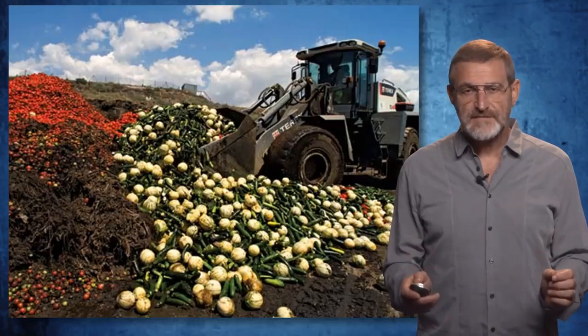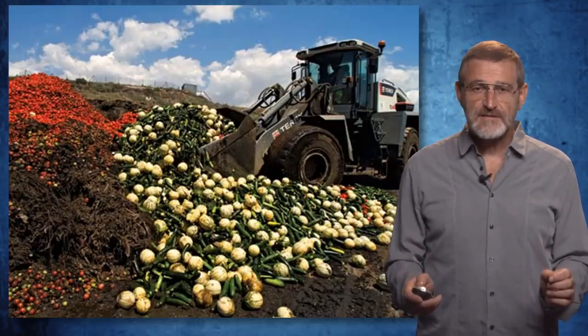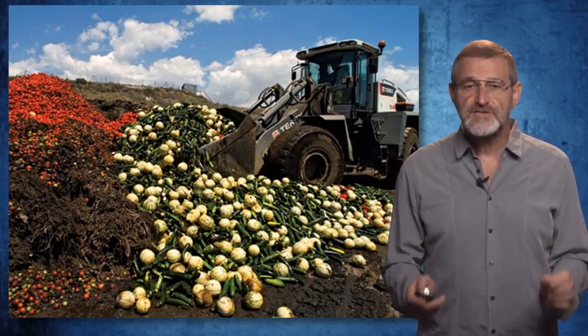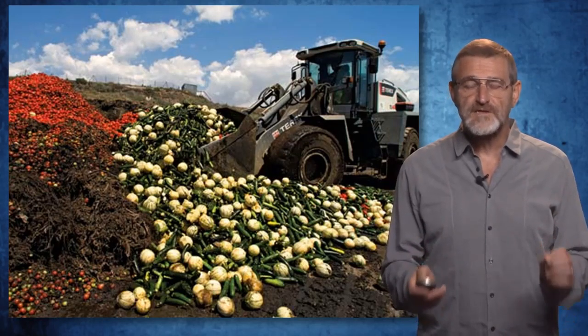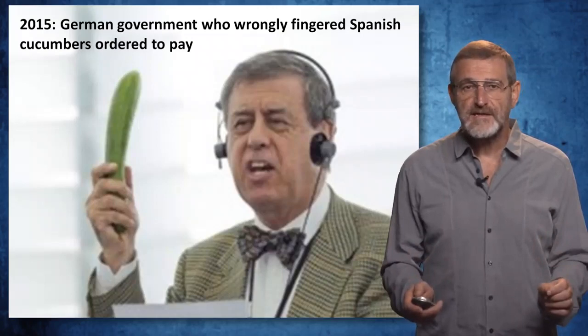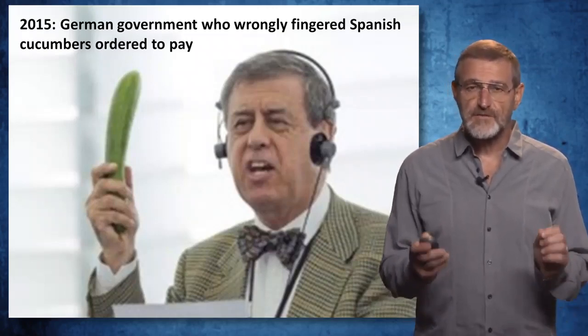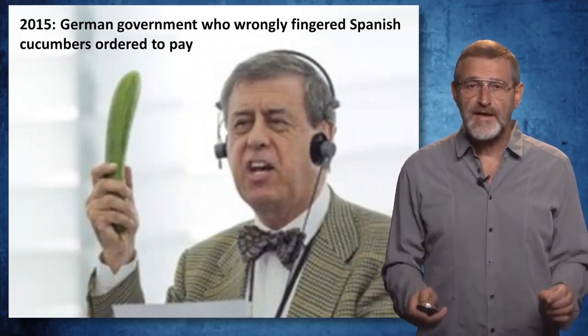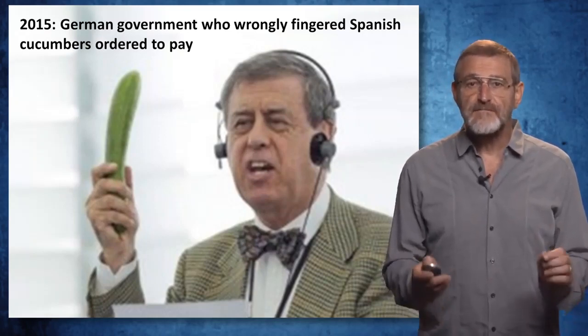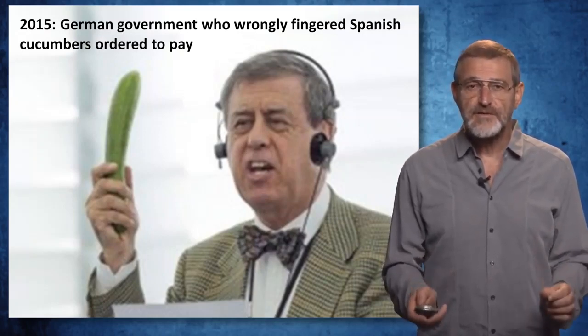In the beginning of the outbreak, German officials identified cucumbers as a likely source of infection, and thousands of tons of cucumbers and other vegetables were destroyed all over Europe. Four years later, it turned out that German officials were wrong, and they were ordered to pay compensation to Spanish farmers who lost billions from destroyed cucumbers.